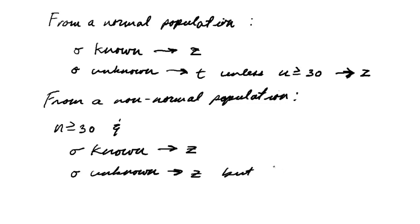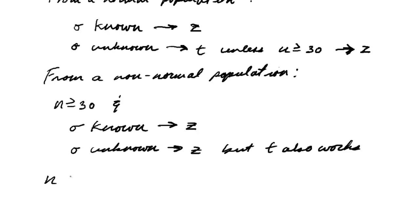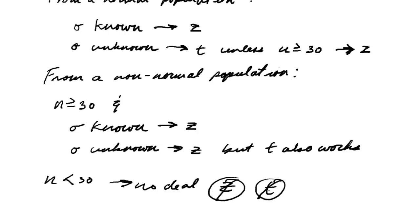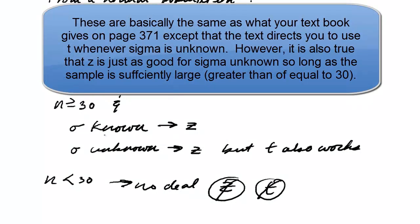If n is less than 30, T also works. But if n is less than 30 and it's from a non-normal population and you don't know sigma, it's basically no deal — neither Z nor T. Because in order to use T for n less than 30, you have to know that it comes from a normal population. So these are basically your rules.